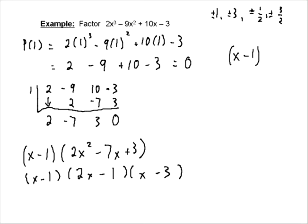So, fairly straightforward, once we have determined what these possible values are, what gives us a remainder equal to 0, there's our binomial, and then we factor our quadratic.